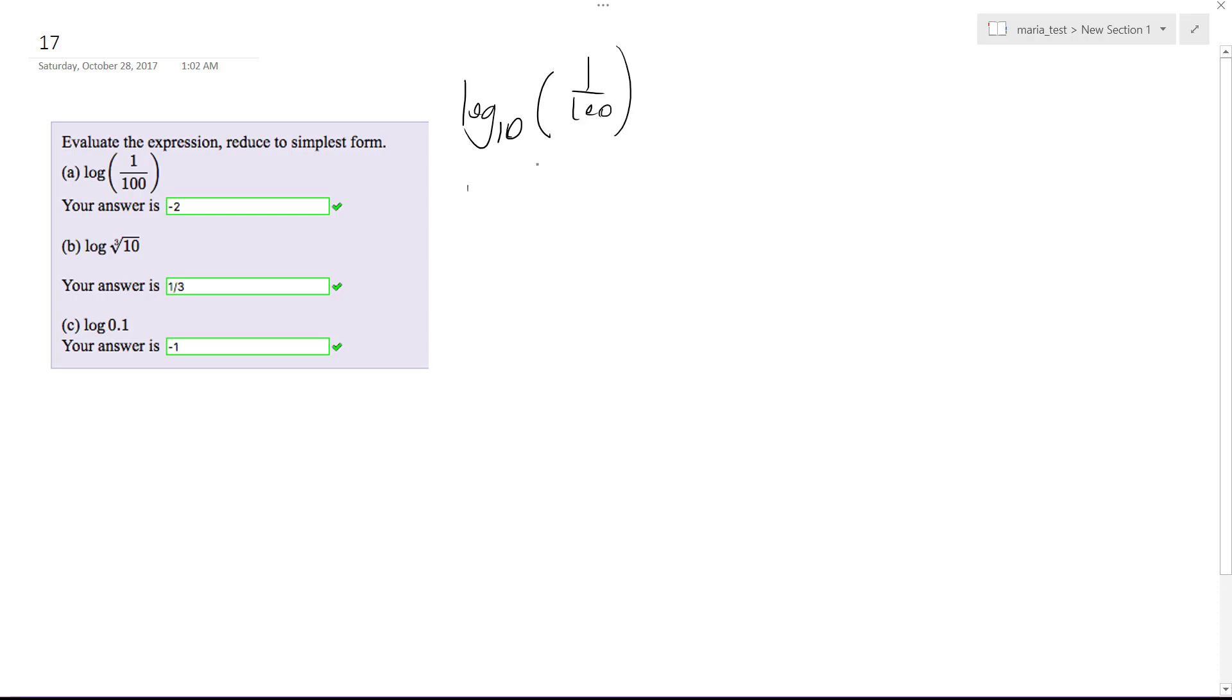I could rewrite this as log base 10. I might convert this to 10 because if you have the same base as your base up here, you can get rid of your log. So this is the same thing as log 10 raised to the negative 2, which is 1 over 100. Logs cancel out and you're just left with negative 2.